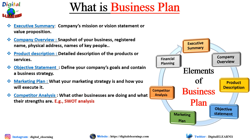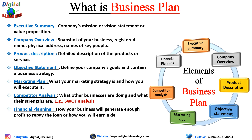Last but not least is the financial planning section. It addresses how your business will generate enough profit to repay the loan, or how you will earn a decent return for your investors. Even the most digital and sustainable businesses have expenses, so companies need to plan their financials, which includes assets, liabilities, expenses, and debt. It outlines how your business will generate enough profit and how you will repay it back to the stakeholders. Here you will provide monthly or quarterly sales estimates, expenses, and profit estimates over the next three years.